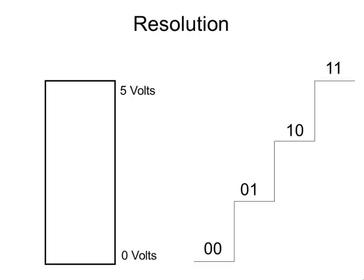Resolution means the smallest change in voltage that an ADC can represent — how small of a step size is this? Each step represents a certain change in voltage. So if you look over here, you'll see this is a 2-bit analog-to-digital converter. That doesn't mean it costs 25 cents — it means it produces a 2-bit output.